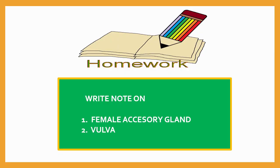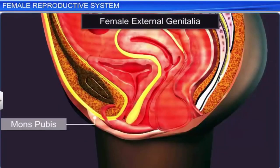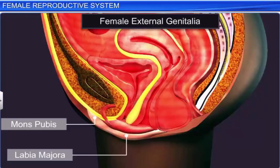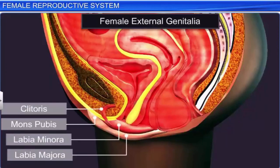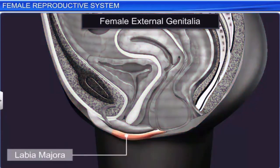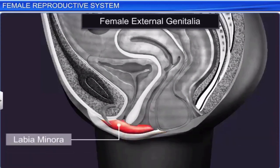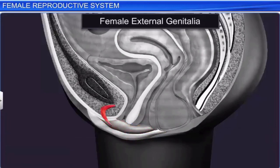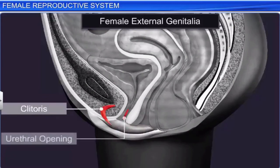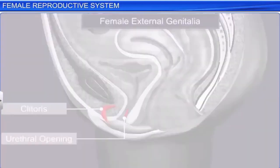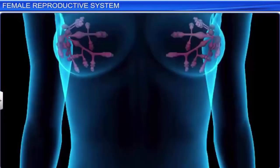The animation summarizes: female external genitalia includes the mons pubis, labia majora, labia minora, and clitoris. The labia majora consists of fleshy folds of tissue extending down from the mons pubis and surrounding the vaginal opening. Hidden under the labia majora is the labia minora. Towards its upper end lies the clitoris, a small finger-like structure, and below it is the urethral opening. The female reproductive system is supported by the mammary glands.